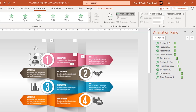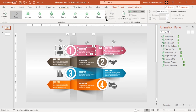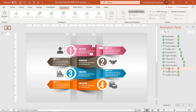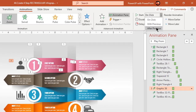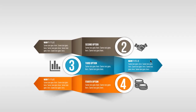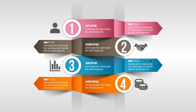Finally, select the remaining text fields and PNG icons. Apply zoom animation and start them after previous. Let's preview the animation once — looks perfect.